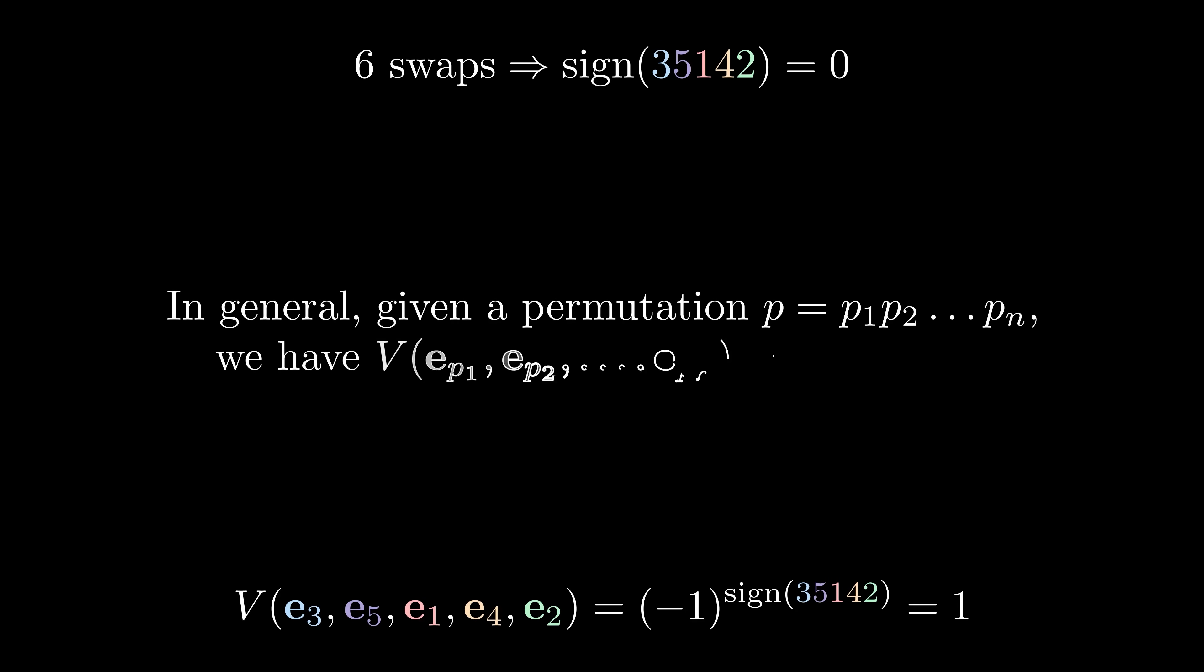In general, the sign gives us a way to express the volume of an n-dimensional cube involving permutations of the basis vectors. We're almost ready to find the n-dimensional determinant, we just need to adapt our familiar rules to n-dimensional space.